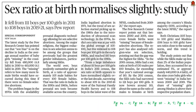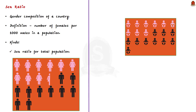Without wasting much time, let's get into the first news article discussion. This news article is about the findings of a recent study by Pew Research Centre on sex ratio in India. Before going through the findings, let us revise relevant information about sex ratio. Sex ratio is basically a proportion that provides us with the number of males to females in a population at a given point of time or time period. It provides us data on gender composition of a country.